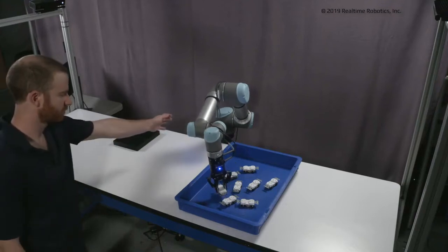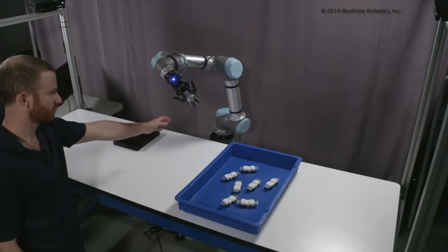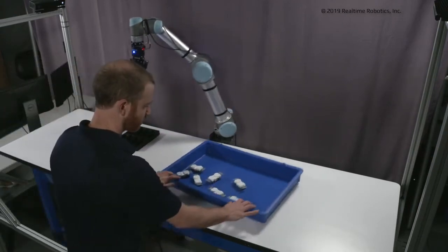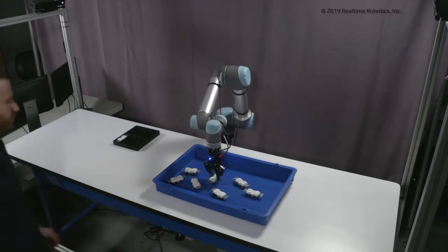Real-time Robotics has developed a combination of proprietary hardware and software called RapidPlan that enables instantaneous robotic motion planning and collision avoidance.